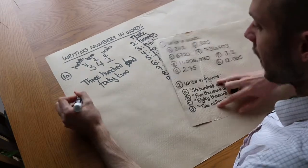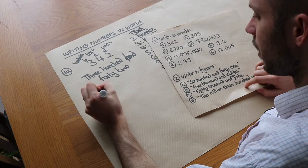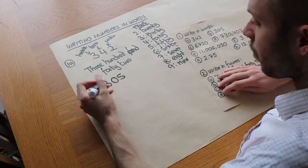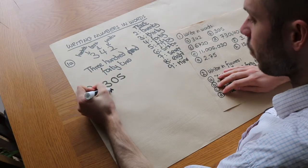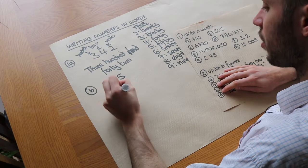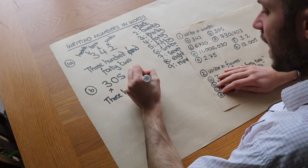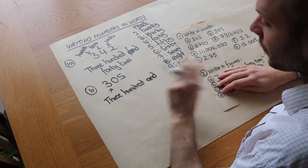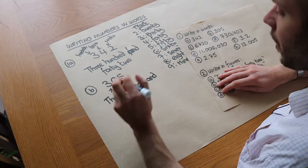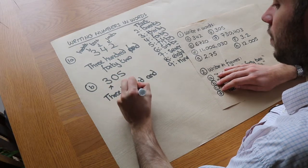What about the next one? We have three zero five. Again we have three hundred, and we put the word 'and' after the word 'hundred'. We don't have any tens, we've just got five, so it's just three hundred and five.